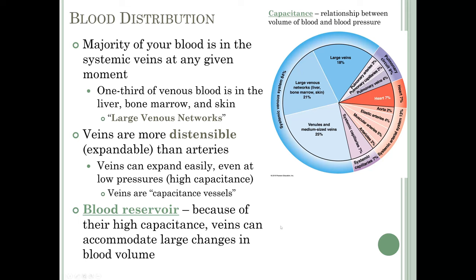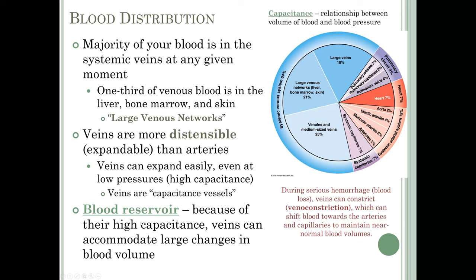Because of the high capacitance, veins can accommodate large changes in blood volume, so we can think of our systemic venous system as a blood reservoir. During a serious hemorrhage, our veins can constrict — called venoconstriction — which takes a large portion of that 64% of blood in the venous circuit and pushes it into the arterial system and capillaries to help maintain normal blood volumes to vital organs like your heart and brain.